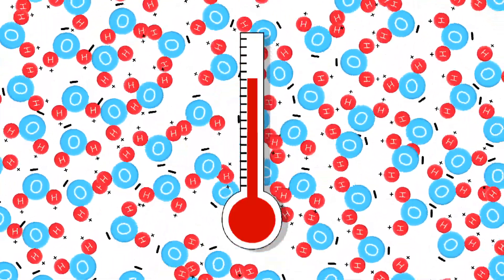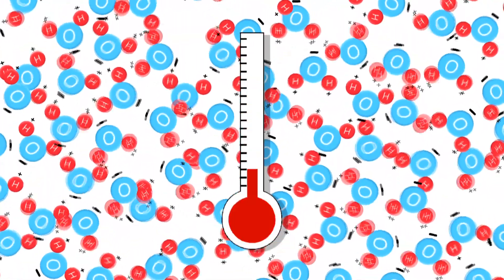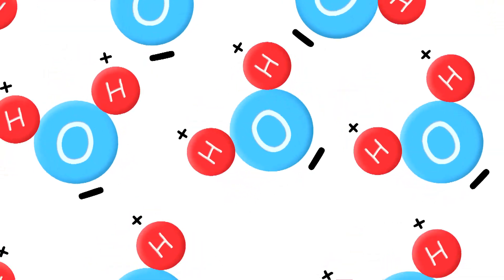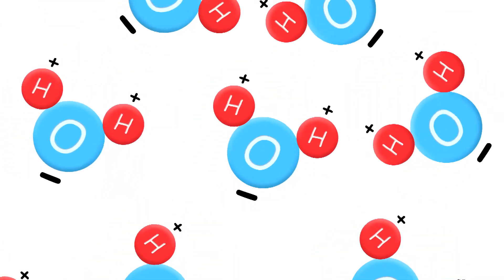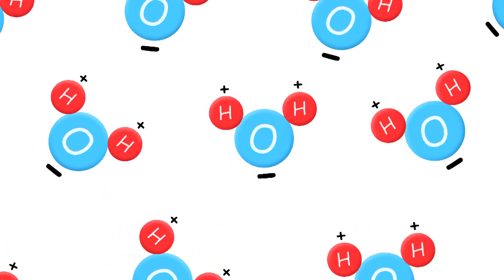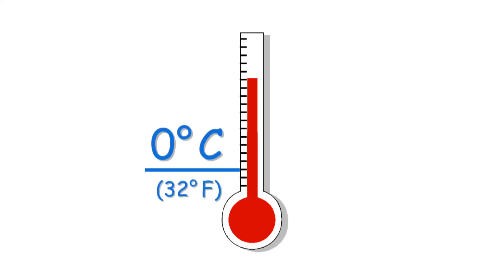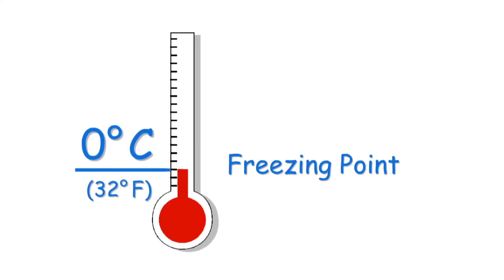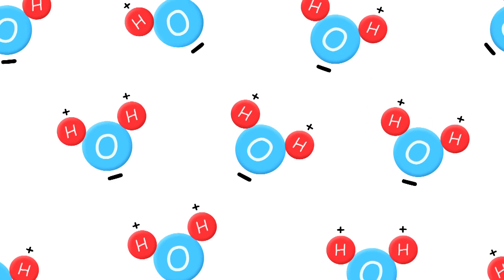But watch what happens if the temperature drops: the energy level drops too. The H2O molecules move more slowly, spacing further apart — as if at arm's length. This is the water expanding as it freezes, which happens at zero degrees Celsius or 32 degrees Fahrenheit — water's freezing point, the temperature at which liquid water becomes solid ice.